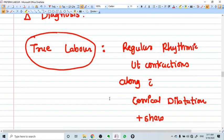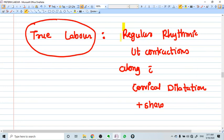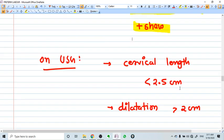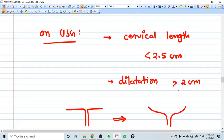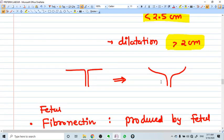Then you should identify whether there is true labor or not. True labor means regular rhythmic uterine contraction along with cervical dilatation and presence of show along with back pain, abdominal pain. If we see on USG, the cervical length is less than 2.5 cm, dilatation happens more than 2 cm. The cervical canal becomes like this from T-shape to U-shape.